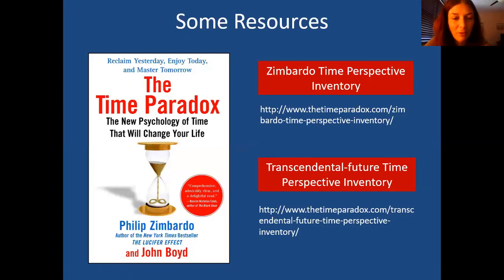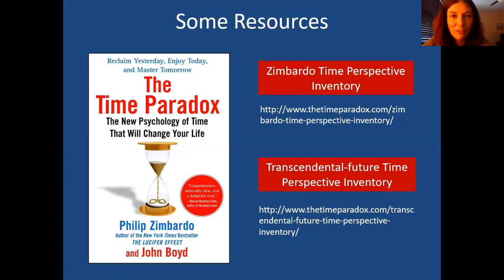And finally, some resources. A lot of the information about past, present, and future orientations came from a book called 'The Time Paradox,' which is very interesting. If you want to figure out more about your time orientation, they have free online time inventories at thetimeparadox.com — I'll try to put the links below on YouTube. It might be a fun, insightful self-inventory to take just to learn more about how you relate to time.